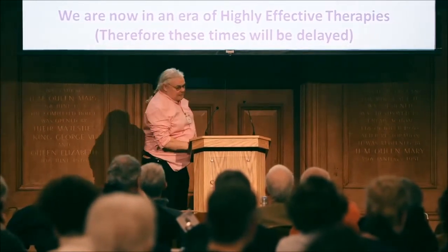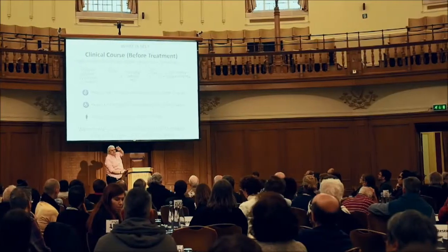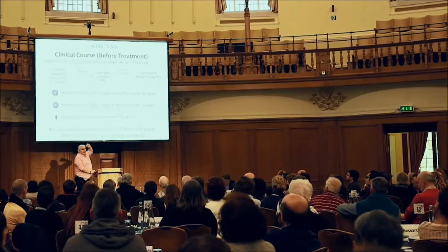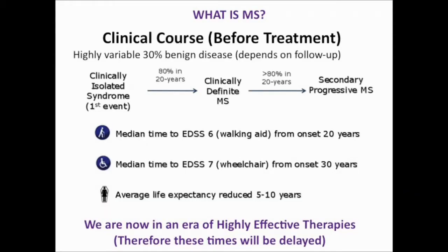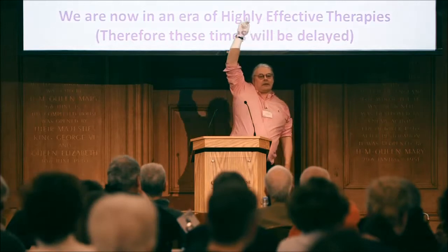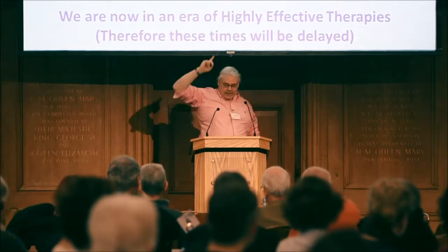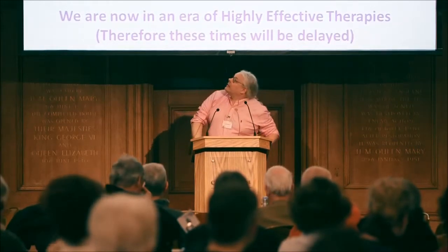Now these are all figures — remember the onion. If you have your first symptom of MS, there's an 80% chance that in 20 years you will be diagnosed with MS, and another 20 years on there's an 80% chance you will develop secondary progression — so the mean time to a walking stick is about 20 years, and the median time to using a wheelchair is about 30 years. Importantly, these figures were generated before treatments existed. Now that we're in the era of treatments, these milestones will come much later, and hopefully if we start treatment early enough they may not occur at all.